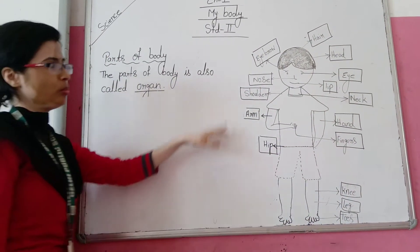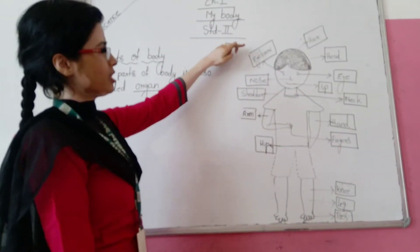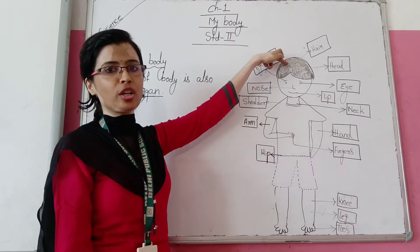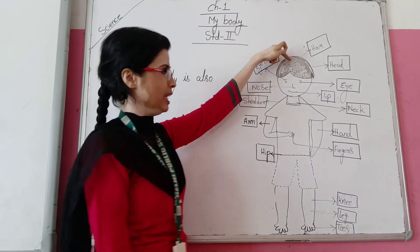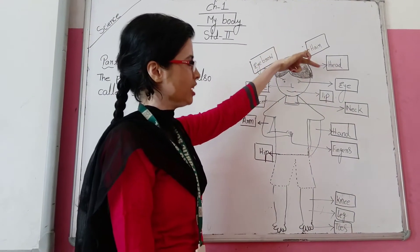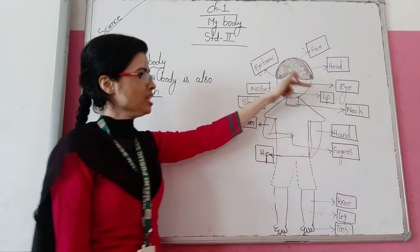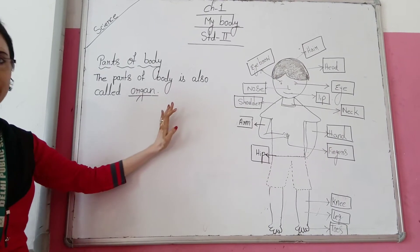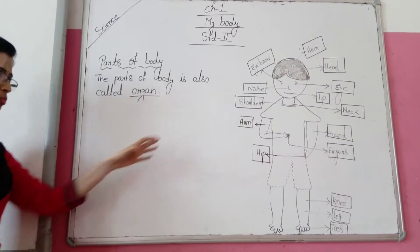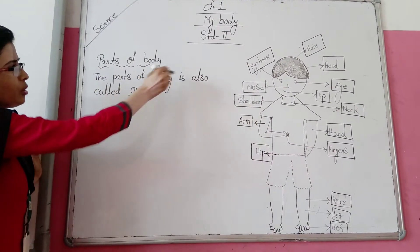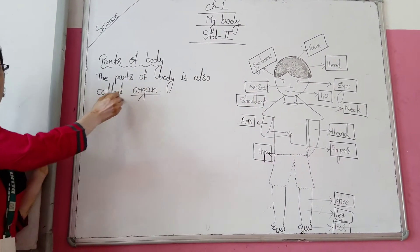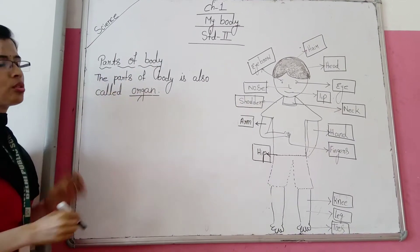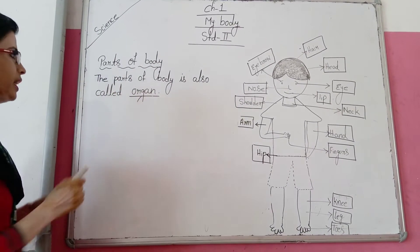There are different parts of the body such as eyebrow, nose, head — the uppermost part of the body is the head — ear, eye, neck, hand, fingers, etc. The parts of the body are also called organs.